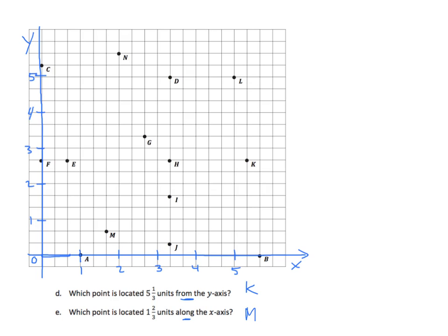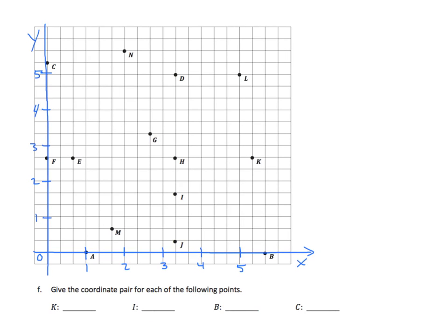Now we need to find the coordinate pair for each of the following points. We're going to give an ordered pair in parentheses with two values — the first one is always x, the second one is always y, separated by a comma. Let's look for K. I'm going to find K on my coordinate plane. I need to first find the x value, so I'm going to draw a vertical line down to my x-axis and I see a value of 5 and 1-third.